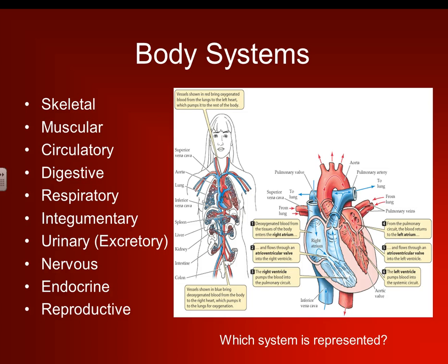Alright, body systems — we have ten of them that we're going to talk about throughout the year: skeletal, muscular, circulatory, digestive, respiratory, integumentary, urinary, nervous, endocrine, and reproductive systems. These are systems we'll talk about throughout this next semester. So which system is represented here? That would be our circulatory system, which circulates our blood throughout our body.